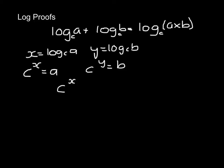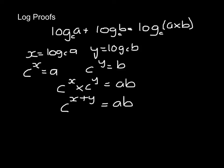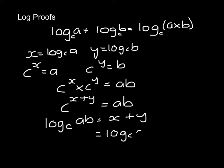Multiplying c to the power x times c to the power y equals a times b. And c to the power x times c to the power y is c to the power x plus y, equals a times b. If we rewrite that in log form, the log to base c of a times b has to equal x plus y. And x was defined as log to base c of a, and y as log to base c of b. So that's my first proof.